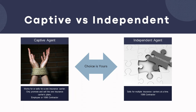Now let's talk about what type of agent you actually want to be. There's a captive agent and then there's an independent agent. If you are a captive agent, that simply means you're only selling for one particular insurance carrier — so you may decide you only want to sell for United or only for Humana. As a captive agent, you could be working directly for one of these carriers as an employee, receiving a salary or hourly wage, with bonuses and extra commissions for sales performance.